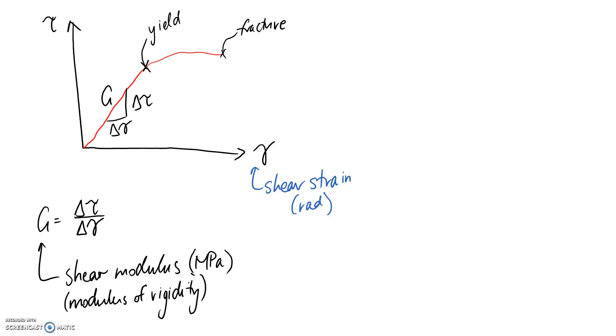So, this is a material property, g, that is. Each different material, like aluminium, copper, steel, whatever, each of them has their own shear modulus.